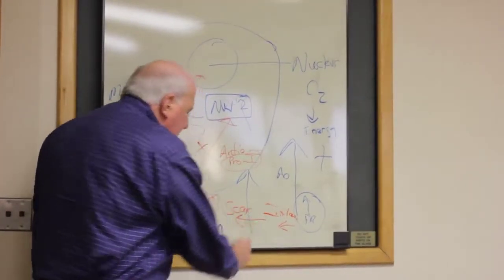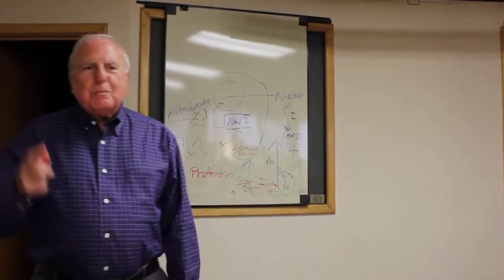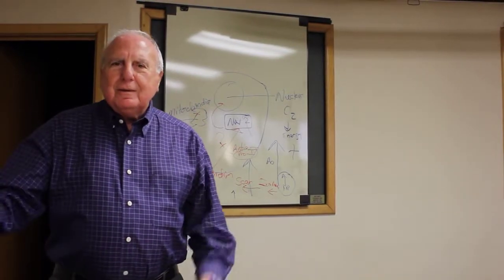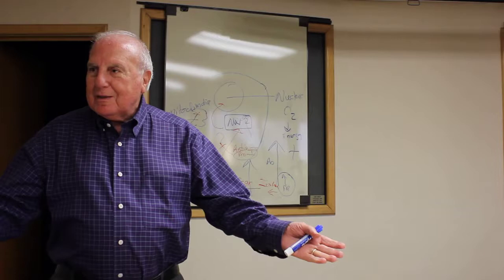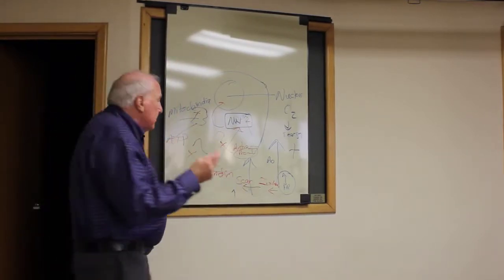The body responds by making more anti-free radicals, which are called pro-inflammatory molecules. And that always ends up in what? A scar. So this always ends up in a scar. And there you are. Scars replace cells. Too many cells replace organs. That's disease. This is the beginning of all disease.